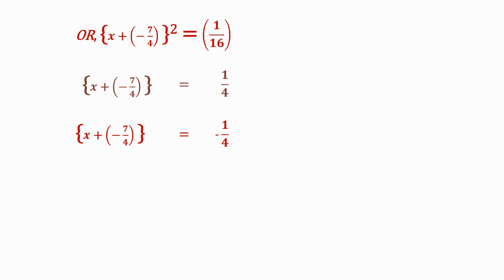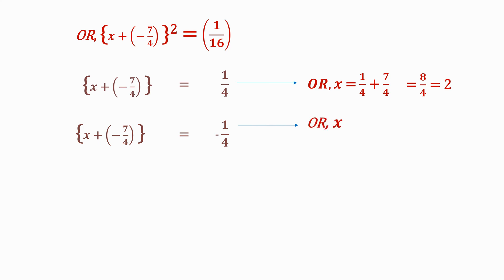Let's solve x - 7/4 = 1/4. We move -7/4 to the other side, and that gives us x = 1/4 + 7/4 = 8/4 = 2. Let's now solve x - 7/4 = -1/4. That gives us x = -1/4 + 7/4 = 6/4 = 3/2. So x = 2 and x = 3/2 are the roots of our equation, or the solution to our equation.